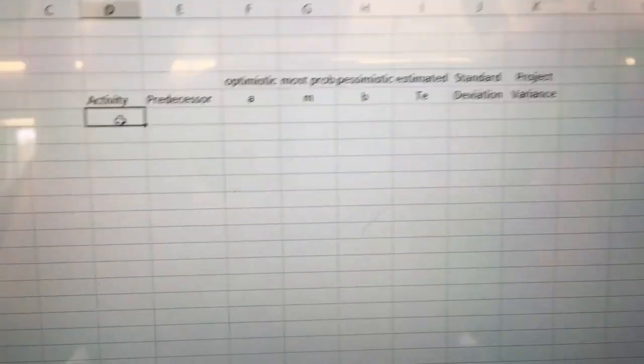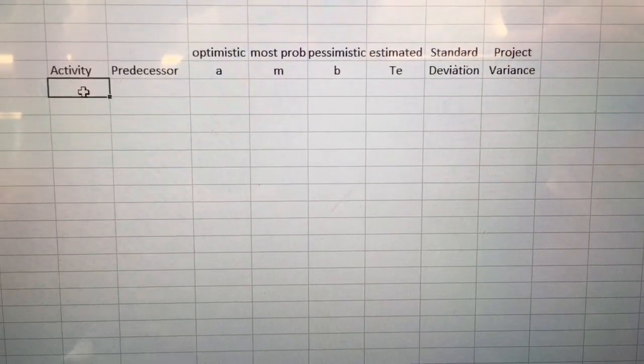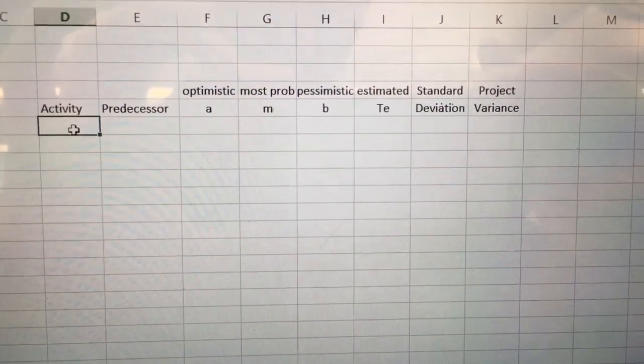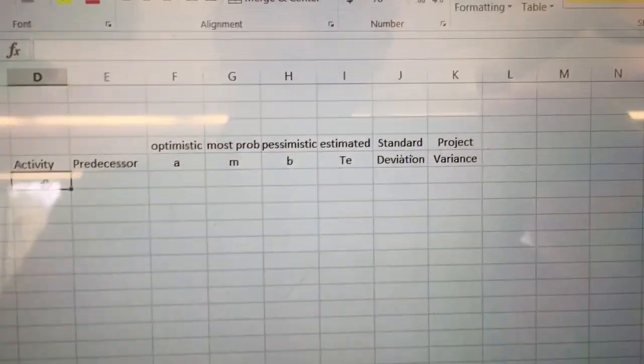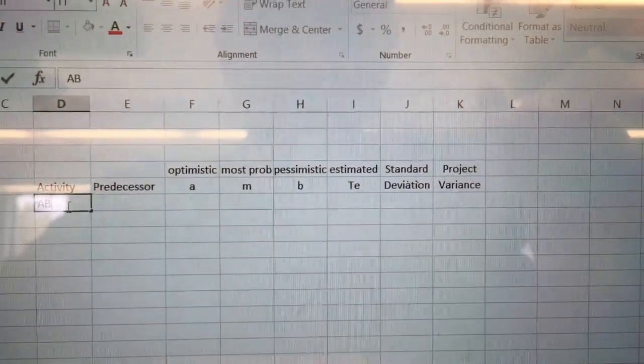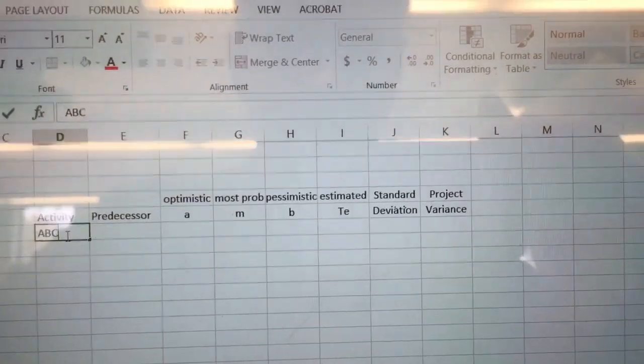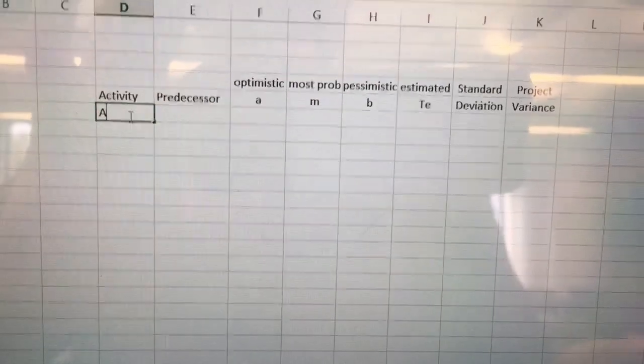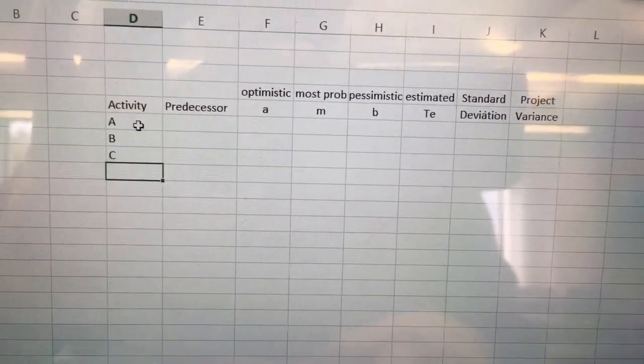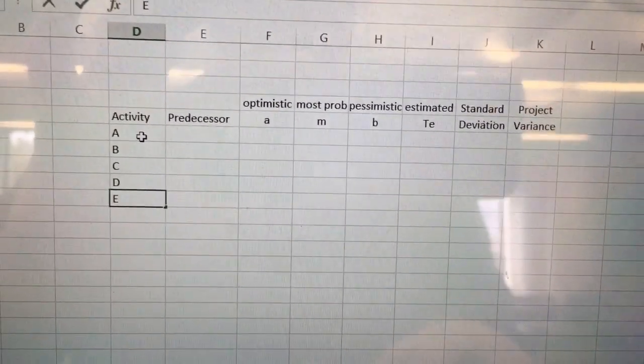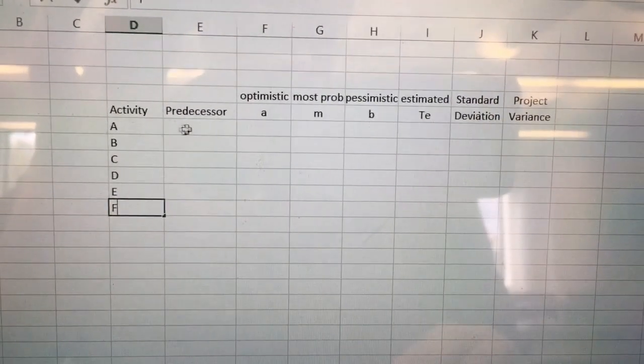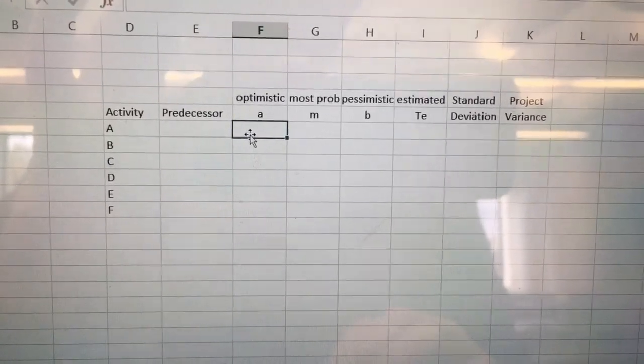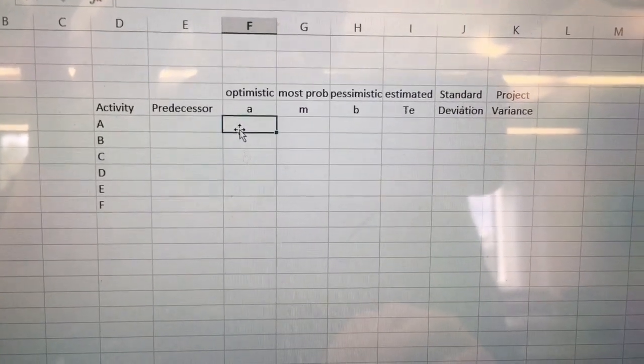Once I have all those items, let's do it like this. Project variance. I can then answer the question of what's the probability of completing this within a certain amount of time. Let's go ahead and put this little bit of work in here. My numbers: A, B, C, D, E, and F. Predecessors I'm not going to worry about on this one because I already know what they're going to be.